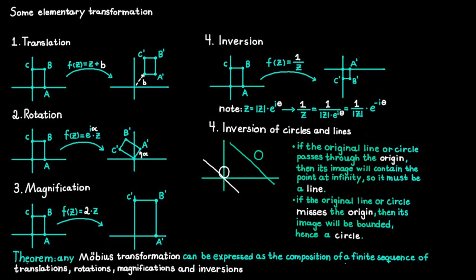This theorem tells us that a Möbius transformation is only a combination of these four transformations. Which means you only need to understand these four different kinds of transformations to be able to determine a Möbius transformation. I'll continue by showing you exactly what I mean by doing some examples.